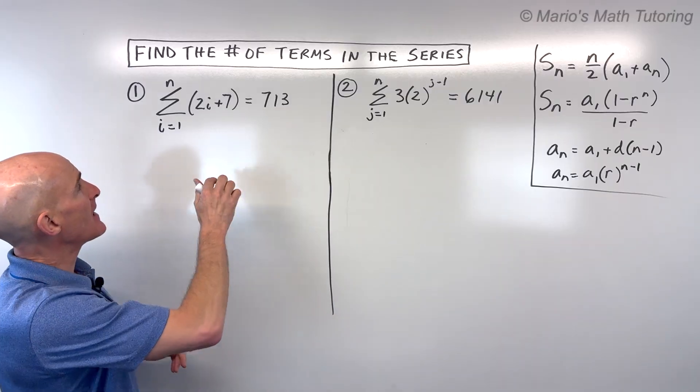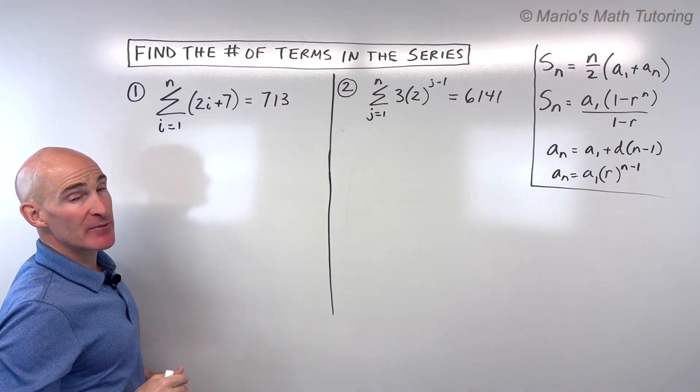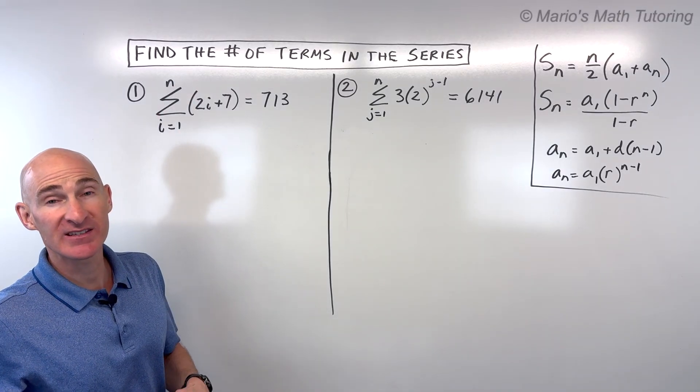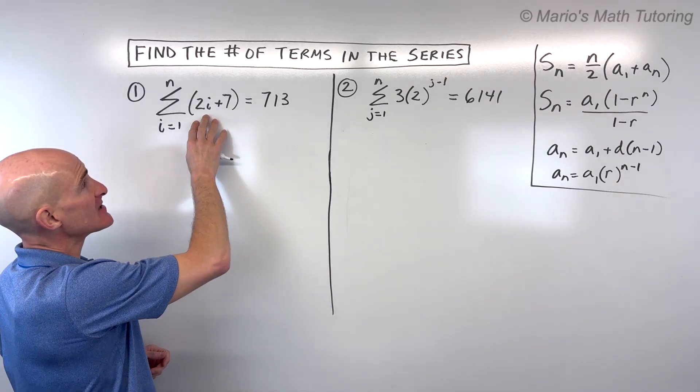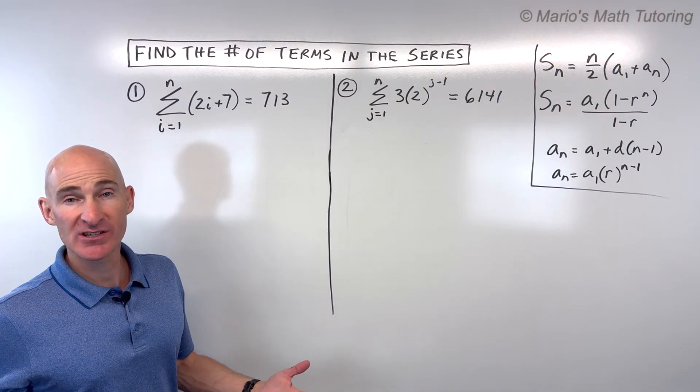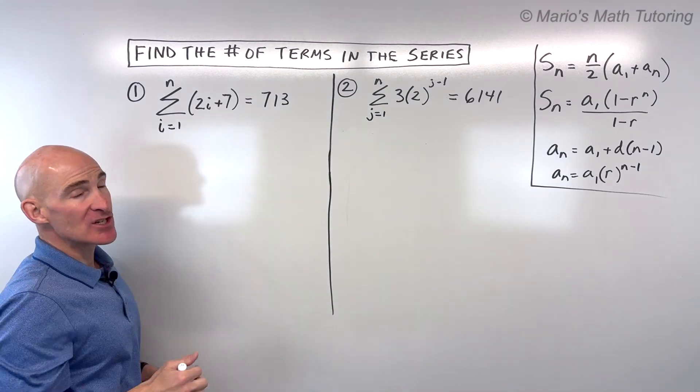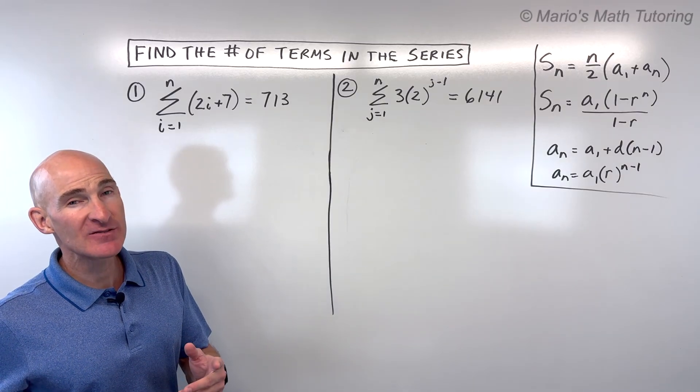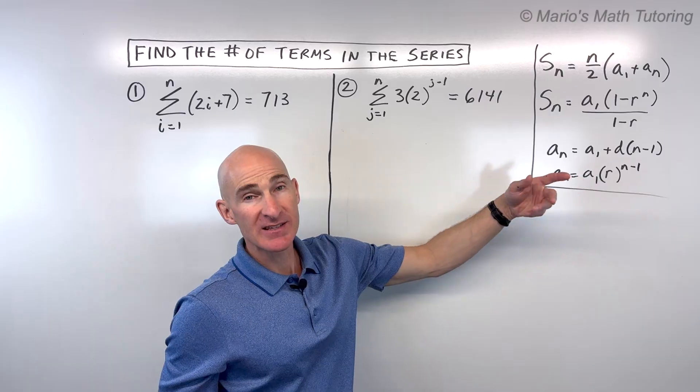So the first example here, we're given this summation notation and they tell us that the sum is 713, but we want to find n, the number of terms in this series. So how do we do that? Well, the first thing you want to recognize is, is this an arithmetic series or a geometric series or something else? Well, I noticed that this is like the equation of a line. It's in that linear form like y equals mx plus b. And that gives me a hint that it's going to be basically an arithmetic series.